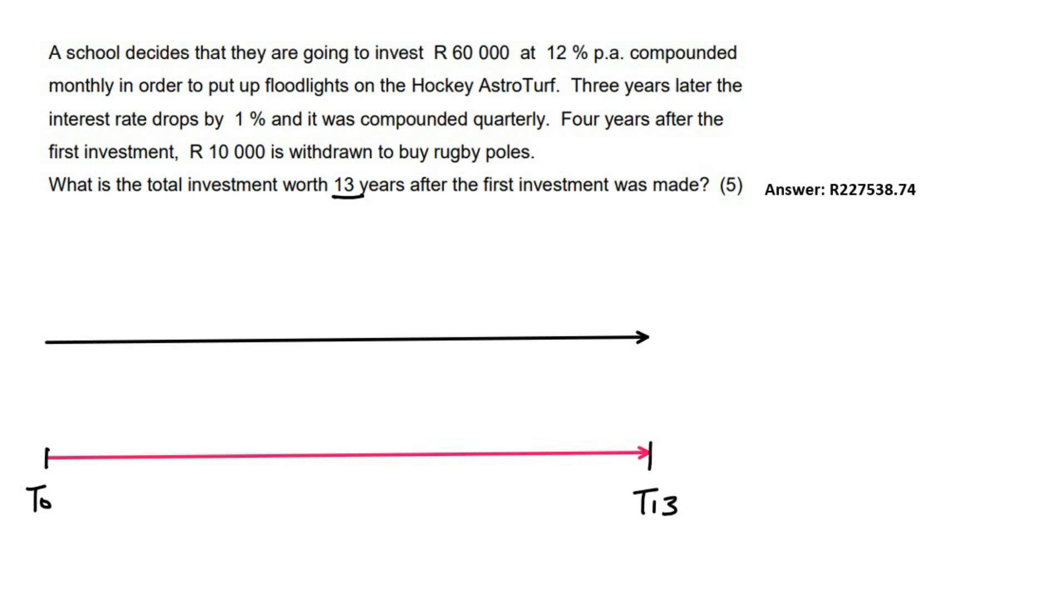We start by, or they start by investing 60,000 Rand. And then for the next payment is after four years. So at T4, they are going to take away 10,000 Rand. So I just put a minus over here and that's going to be 10,000 Rand that is taken away.